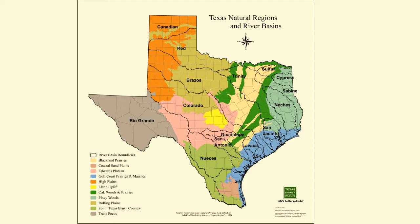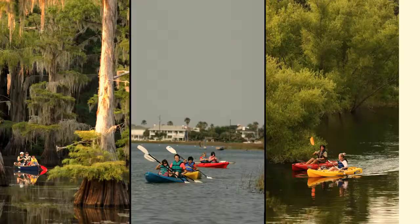Each region has different kinds of habitat for wildlife and opportunities for people. Texas natural physiographic regions can provide very different boating and fishing experiences too. In the pictures here, we see canoeing in East Texas' Caddo Lake — this is on the left.